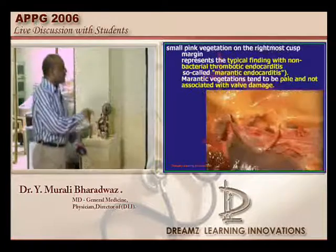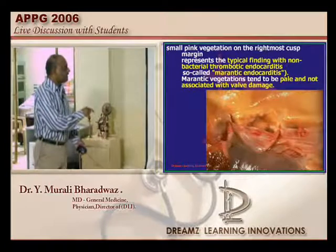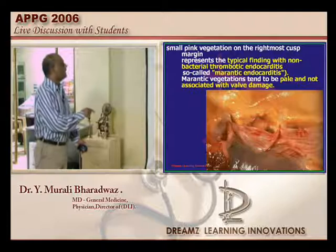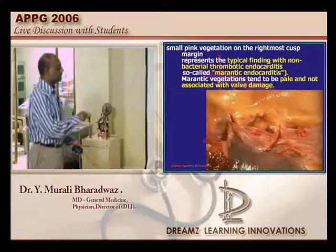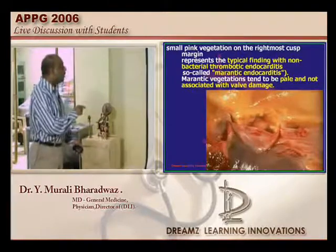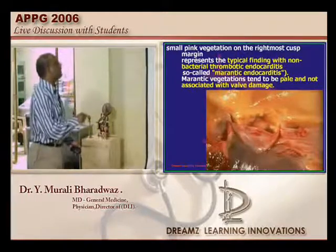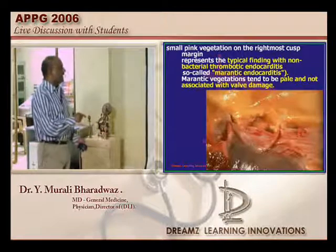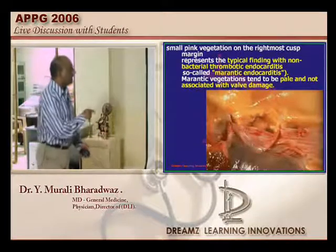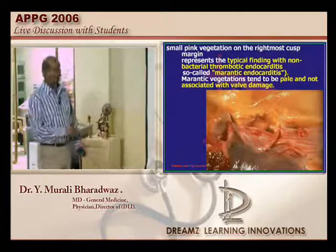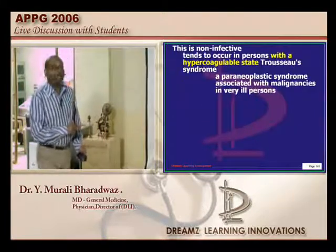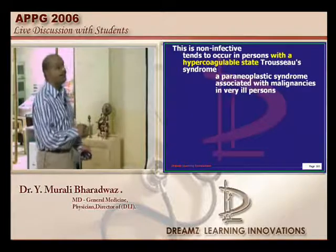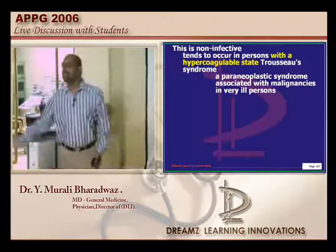Then what are these vegetations, doctor? Here you are able to see the vegetations. These are small pink vegetations in the right uppermost cusp margin. It is seen in the case of non-bacterial thrombotic endocarditis, and these are also called marantic endocarditis. Typically they will be pale in color.